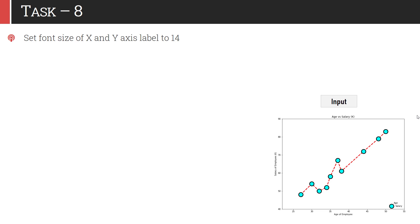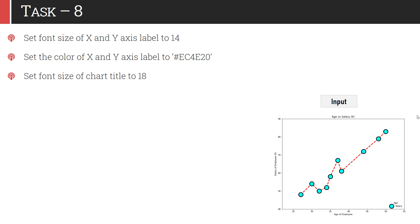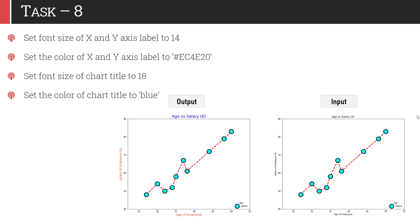In task 8, we will customize these labels and title. You have to set the font size of the x and y axis labels to 14, and change their color to #EC4E20 — that's a hexadecimal color code. You also have to change the chart title font size to 18; make sure the chart title is larger than the axis labels. Finally, set the color of the chart title to blue. Once we apply all four customizations, the graph would look like this — it is more appealing than the previous one.